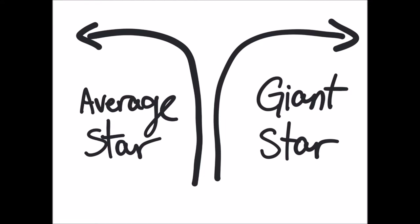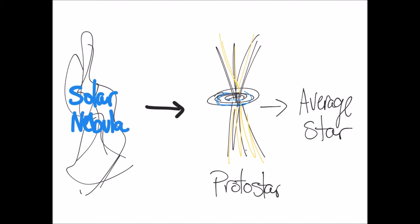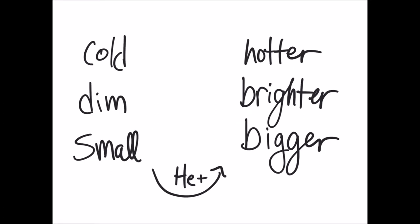Once nuclear fusion has started, a star is born. Depending upon the mass of the star, it can become an average star or a giant star. Average stars' life cycle: matter starts condensing in a solar nebula, a disc forms, and eventually a protostar forms. Once nuclear fusion starts, we have an average star. When nuclear fusion starts, these stars are fairly cool, dim, and small. The star will be made mostly of hydrogen gas, and as it undergoes nuclear fusion, hydrogen fuses and becomes helium. As helium increases, the star becomes hotter, brighter, and bigger.